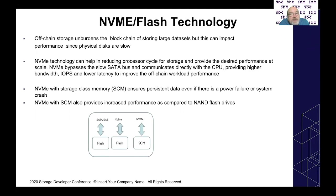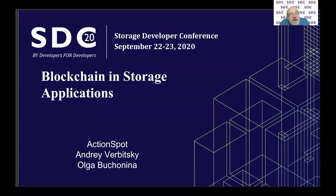They're also going to talk about NVMe flash technology for off-chain storage, which unburdens the blockchain of storing large datasets. This can impact performance since physical disks are slow, so NVMe technology can help. NVMe with storage class memory ensures persistent data even if there is a power failure or system crash, and NVMe with SCM also provides increased performance as compared to vanilla flash drives.